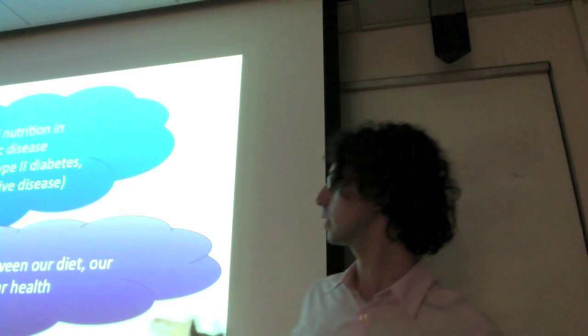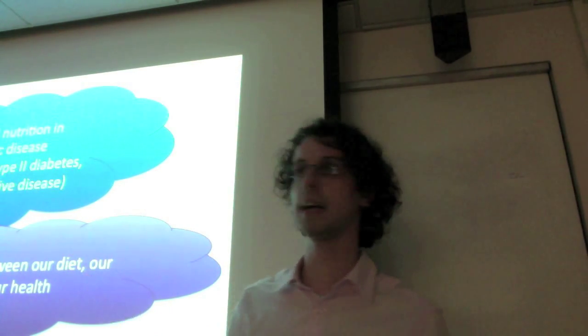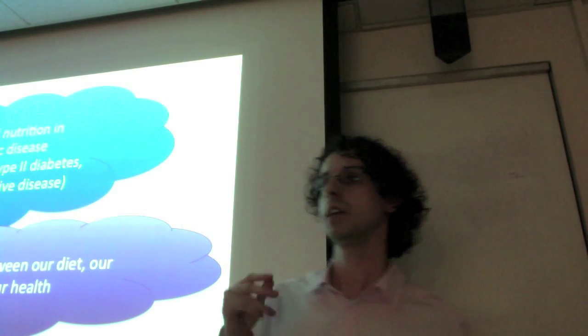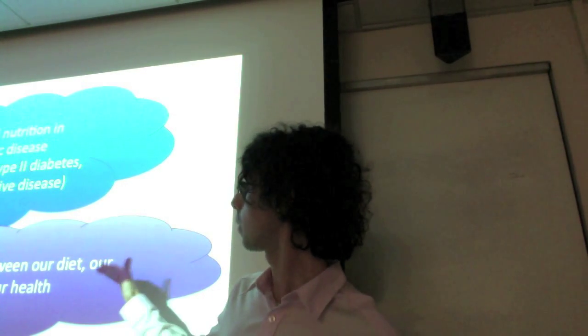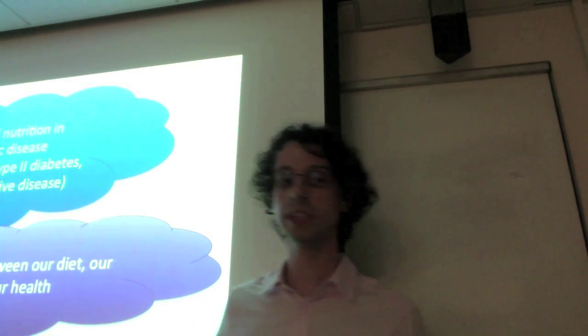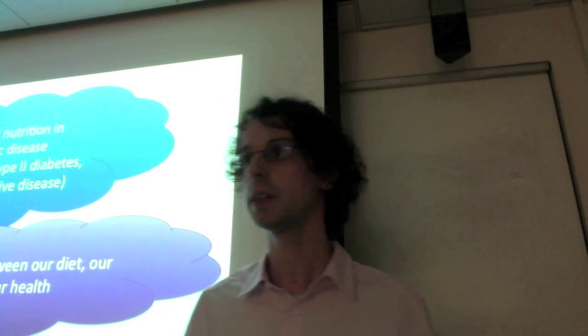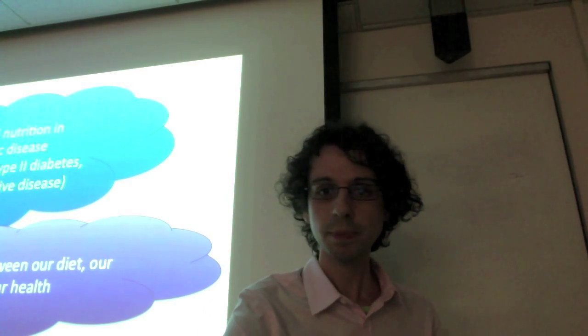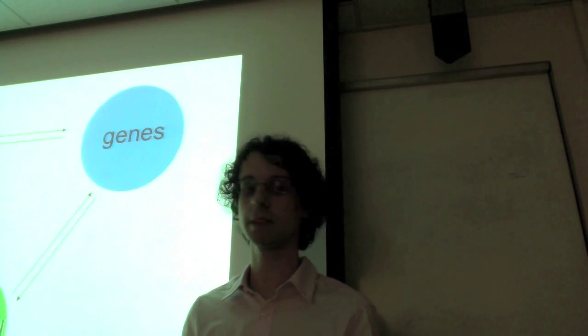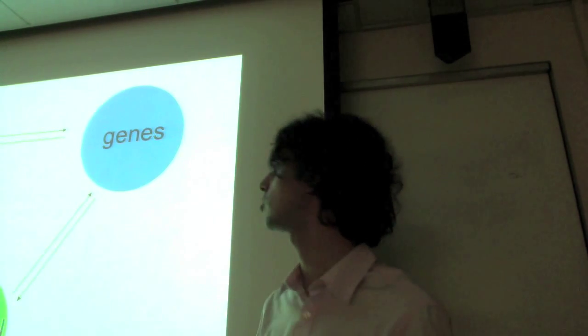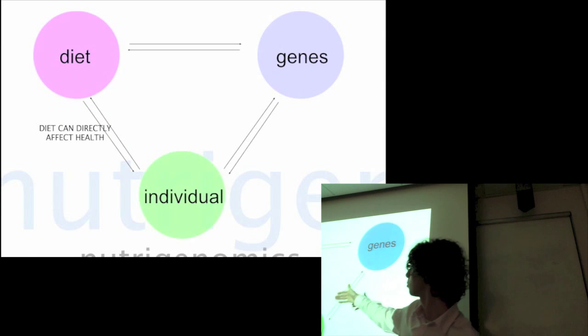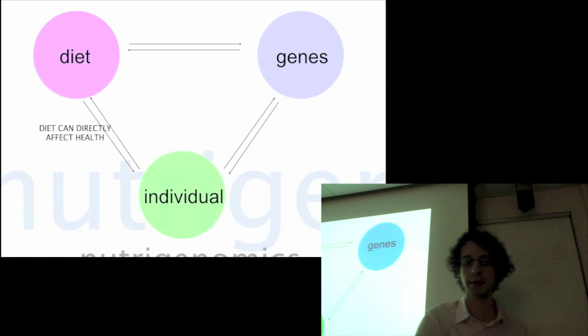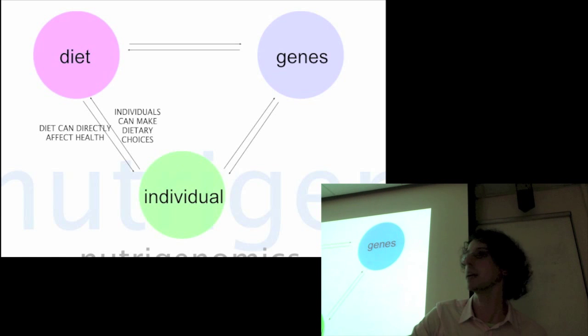So these two aspects are very interesting because it's what tells us that the same food doesn't necessarily do the same things in all of us because it depends on how it interacts first with our gut microbiota and then with our genes. And of course, both our gut bacteria and our genes, our genetic makeup is unique.